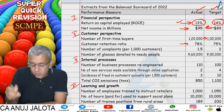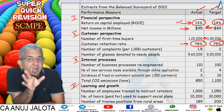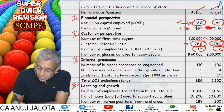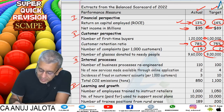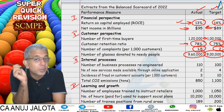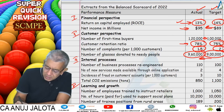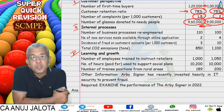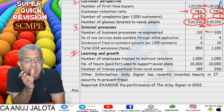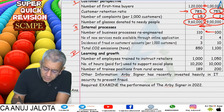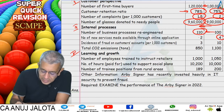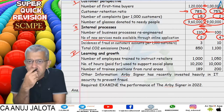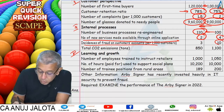Customer retention ratio — repeat buyers — target 75%, achieved 78%, which is quite good. Number of complaints are falling, which is a pretty good sign. Number of glasses donated to needy people: target 9 lakh, achieved 9 lakh 60 — this also reflects higher sales since one pair is donated for every purchase, and it's also good for the company's reputation. Under internal processes, number of business processes re-engineered: target 100, achieved 110 — pretty good.